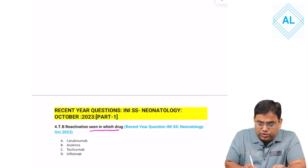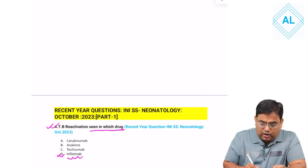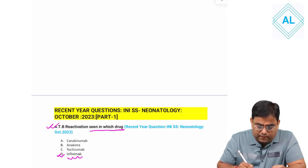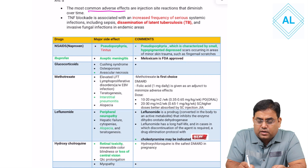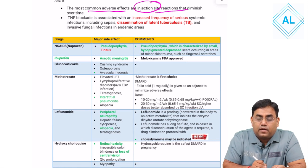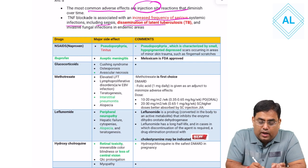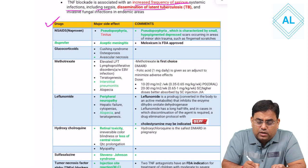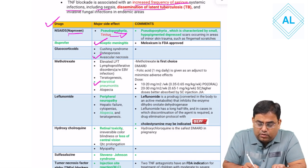Next question: TB reactivation is seen with which drug? TB reactivation is seen with infliximab, a tumor necrosis factor blocker. The most common adverse effect of infliximab is injection site reaction. TNF blockade is associated with increased frequency of severe systemic infections including sepsis and dissemination of latent tuberculosis. Other important drug side effects: naproxen causes pseudoporphyria, ibuprofen causes aseptic meningitis, glucocorticoids cause avascular necrosis, methotrexate causes interstitial pneumonitis, alopecia, and elevated LFTs, leflunomide causes peripheral neuropathy.